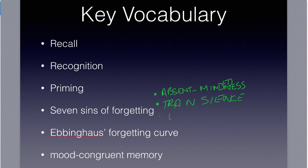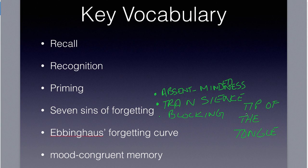The third sin is blocking — our inability to access information. This is the tip-of-the-tongue phenomenon, where you know the information but just can't access it. Like, 'I know the name of that actor in that movie, but what was his name?' You're not able to quite access it. Tip-of-the-tongue may show up on a test and on the AP exam, so you should know it. It has to do with blocking of information.